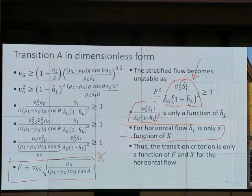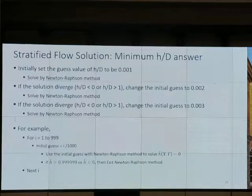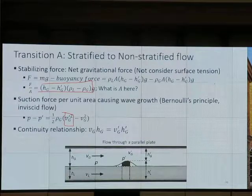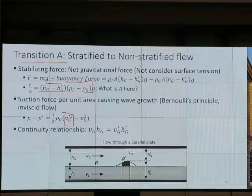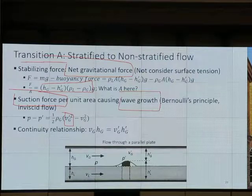One thing I want you to know is the source of this equation - where does it come from? It's a comparison between what force and what force. If you say suction and net gravitational force, you get one point. If you say turbulence force or something, you don't get any point. So you have to know not just how to use this equation, but that transition A, stratified to non-stratified, is a competition between net gravitational force and suction force that causes wave growth.